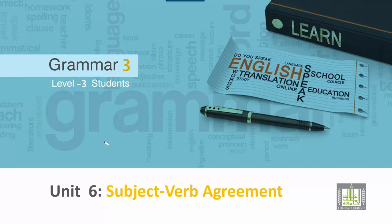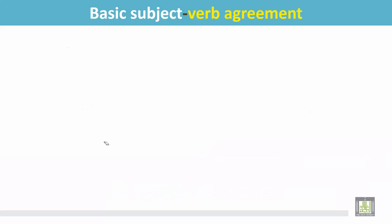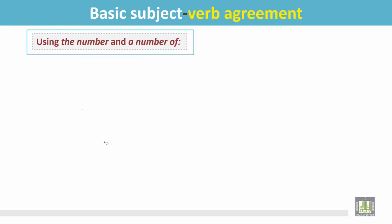Grammar 3 for Level 3 students. Unit 6: Subject-Verb Agreement. Basic Subject-Verb Agreement — using 'the number' and 'a number of.'